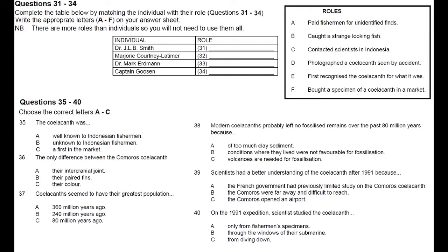How could the coelacanth disappear for over 80 million years and then turn up alive and well in the 20th century? The answer seems to be that fossil coelacanths appear to live in environments with clay sedimentation with plenty of volcanic activity. Modern coelacanths, both in the Comoros and Sulawesi, inhabit caves and overhangs in vertical marine reefs at about 200 metres. Environments not conducive to fossil creation.